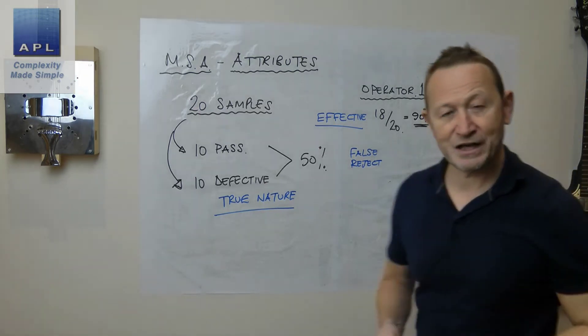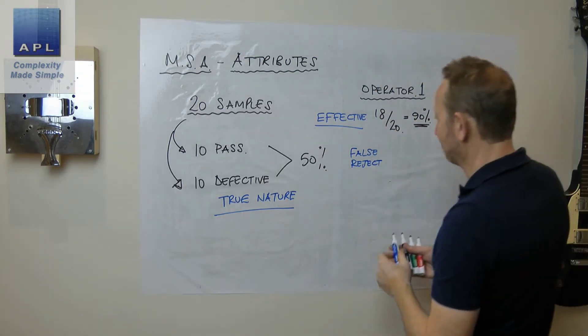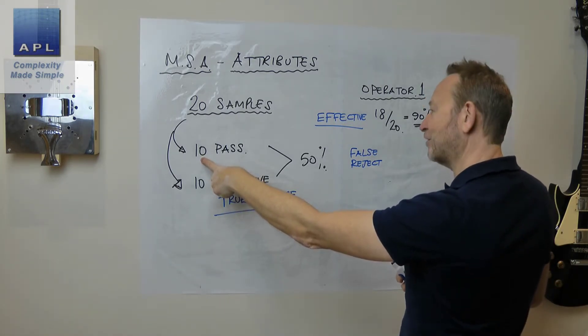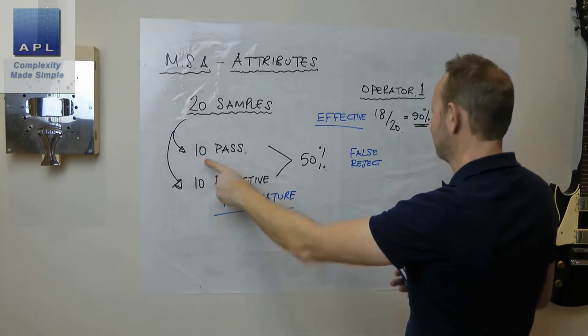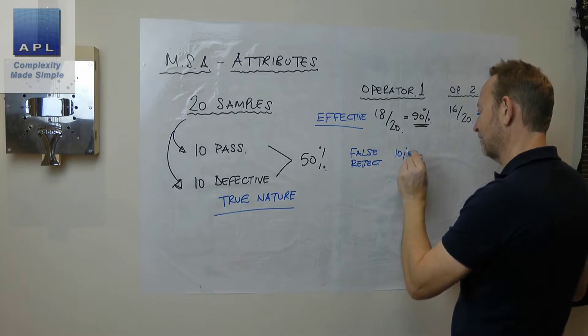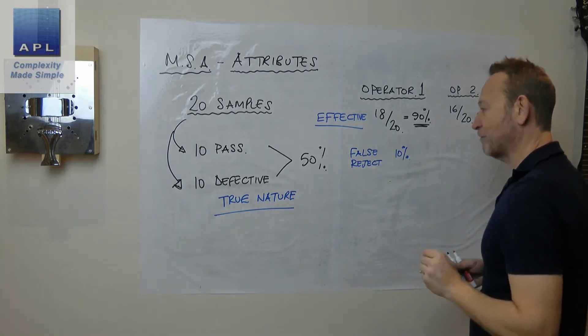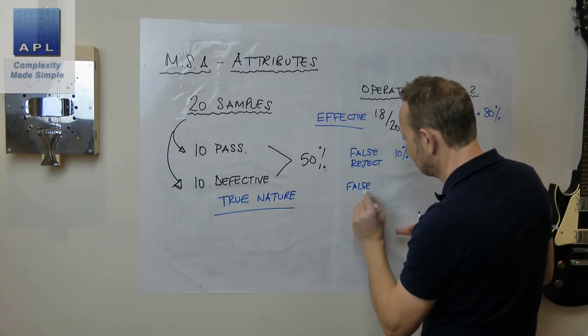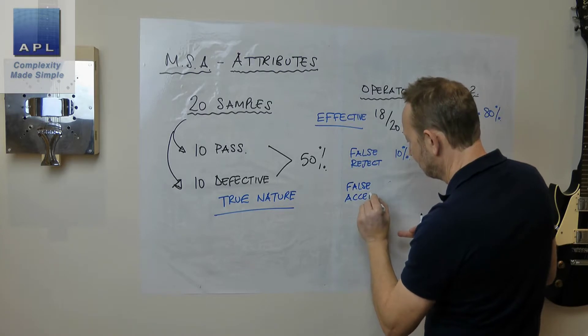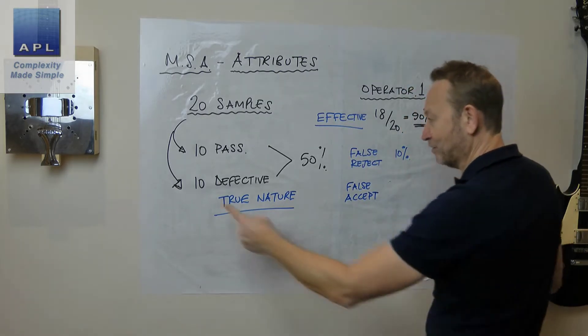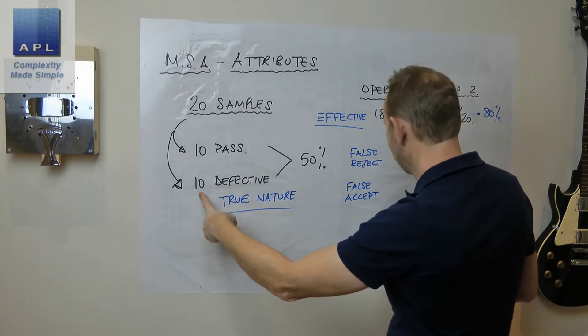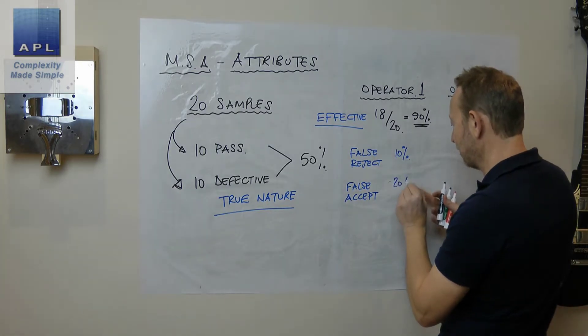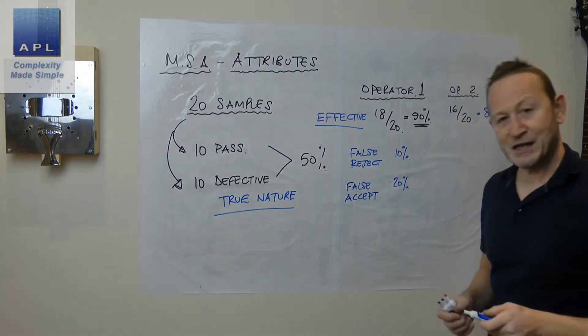Then the next thing you're going to work out is the chance of a false reject. So what's the chance you're going to get a false reject? And of course, that's going to be defined effectively by the percentage of mistakes that you've made here. So if you've made one in 10 mistake here, then there's a 10% chance of a false reject. Then you're going to get the opposite of that. False accepts and the same thing. So we look at how many mistakes have got made with these parts. Let's say two have got made in that case. So there's a 20% chance of a false accept.